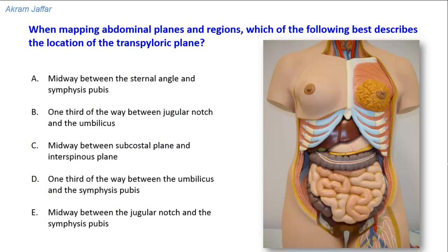When mapping abdominal planes and regions, which of the following best describes the location of the transpyloric plane? The transpyloric plane is an important plane in describing the surface anatomy of the abdomen. A lot of anatomical relations take place at the transpyloric plane. It was called the transpyloric plane referring to the pylorus of the stomach, although this is not the actual anatomical location of the pylorus unless the stomach is empty and the patient is in the supine position.